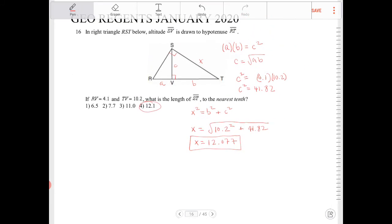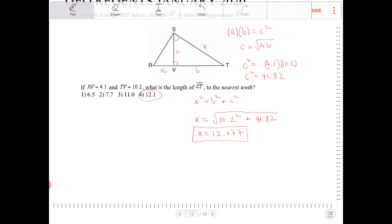So again, just to recap, whenever you're given a situation where you have a right triangle and an altitude is drawn from the right angle to the hypotenuse, the relationship between the partitions of that right triangle, of the hypotenuse there, the relationship will always look like this.